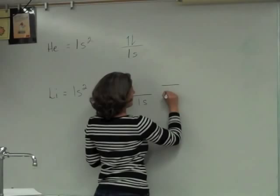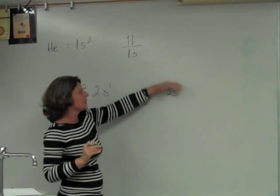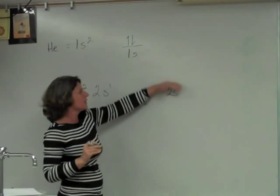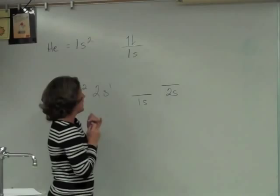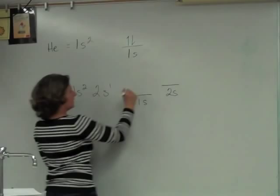This tells me that these electrons have a little bit more energy - they are in a little bit higher of an energy state. So my 1s orbital is full, and my 2s orbital has a single electron.